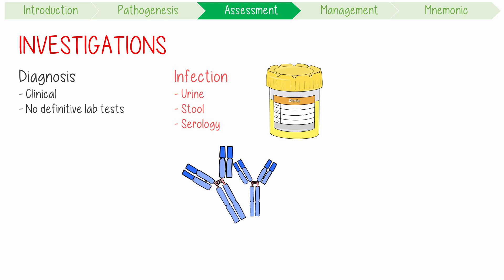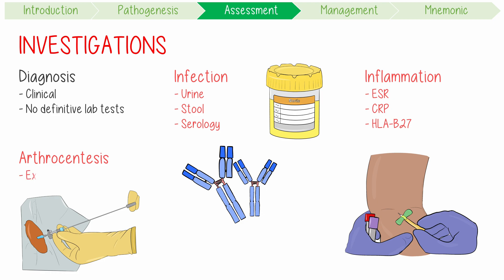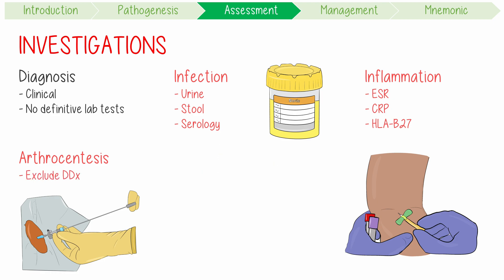You can characterize the extent and impact of the inflammatory process at hand. The ESR and CRP are usually markedly elevated. Testing for HLA-B27 positivity only has a role in prognostication because it has a low negative predictive value.